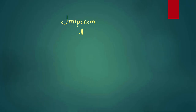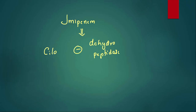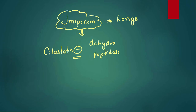Imipenem, when it reaches the kidney, is metabolized by an enzyme called dehydropeptidase. If this enzyme metabolizes imipenem in the kidney, imipenem will be shorter-acting. So cilastatin was developed to inhibit this enzyme. Cilastatin inhibits dehydropeptidase, making imipenem longer-acting. It also decreases the toxicity of imipenem.